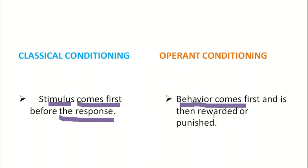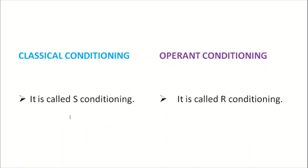Whereas in operant conditioning it is quite the opposite — behavior comes first and is then rewarded or punished. If the behavior is rewarded it will be repeated, whereas if the behavior is punished it is less likely to be repeated. For example, first the rat pressed the lever, then it was rewarded, and on receiving its reward the rat repeated this behavior again and again.